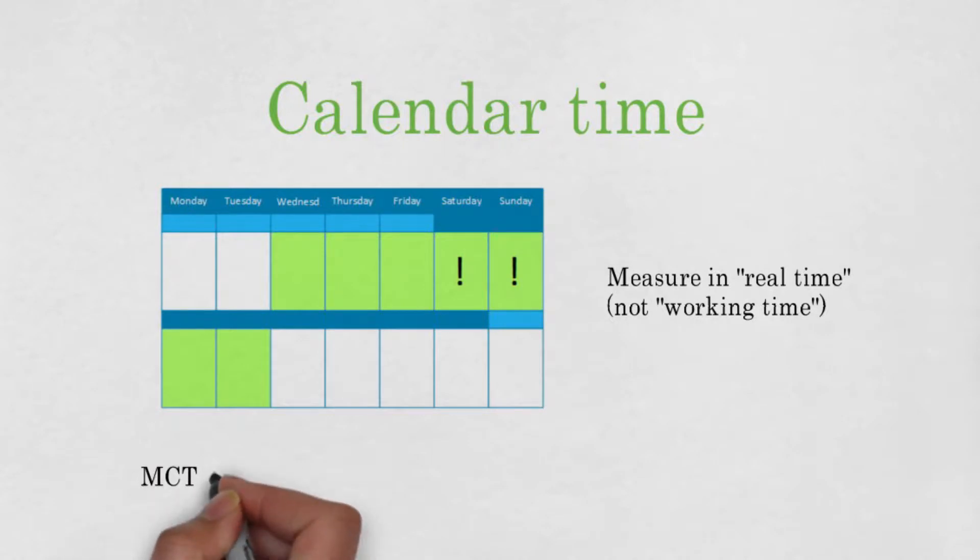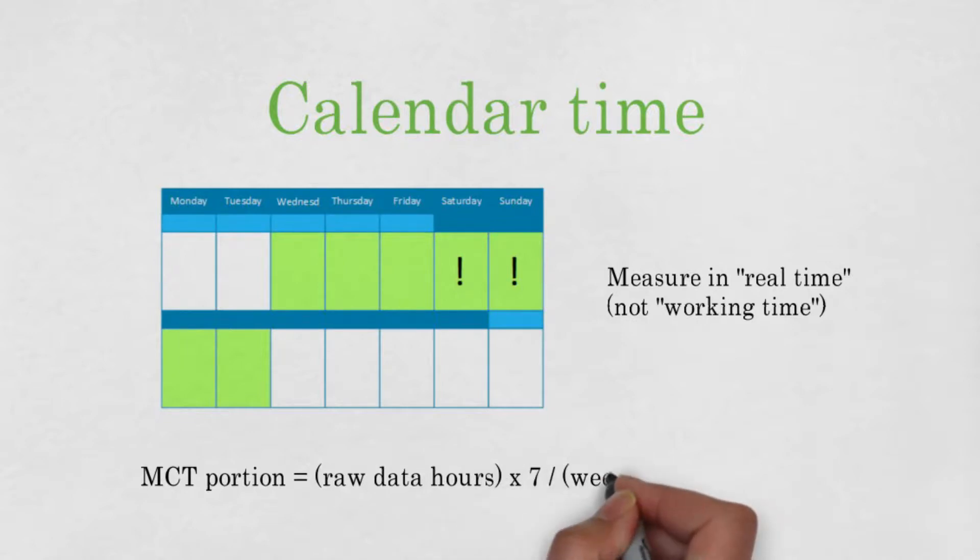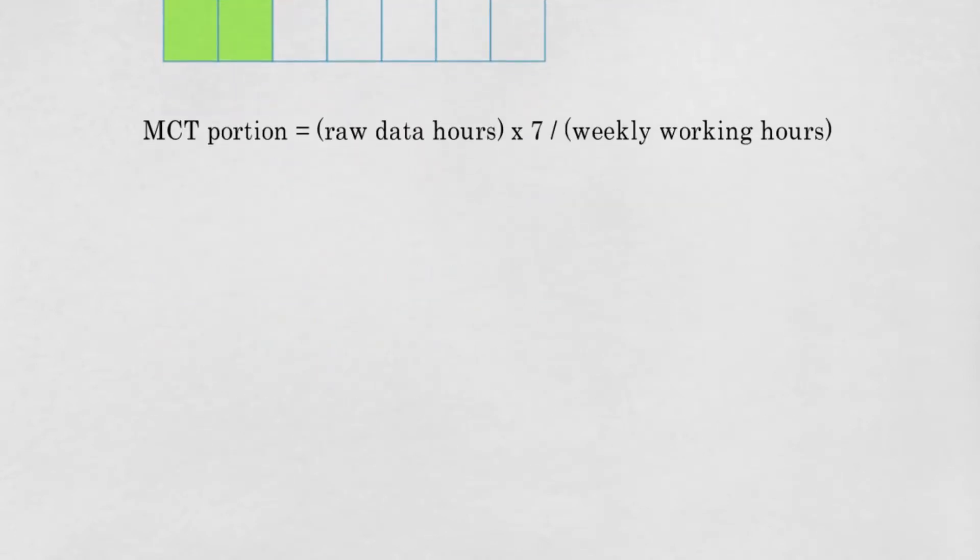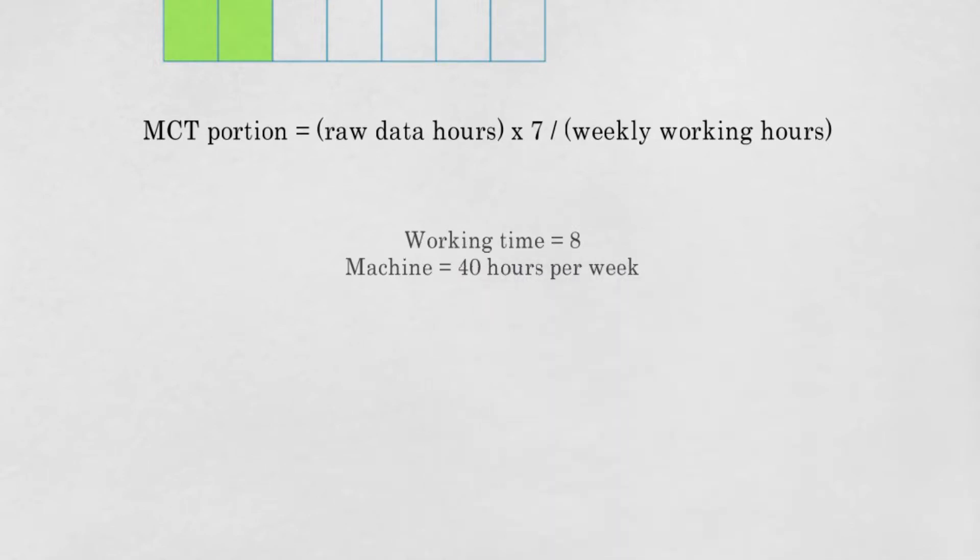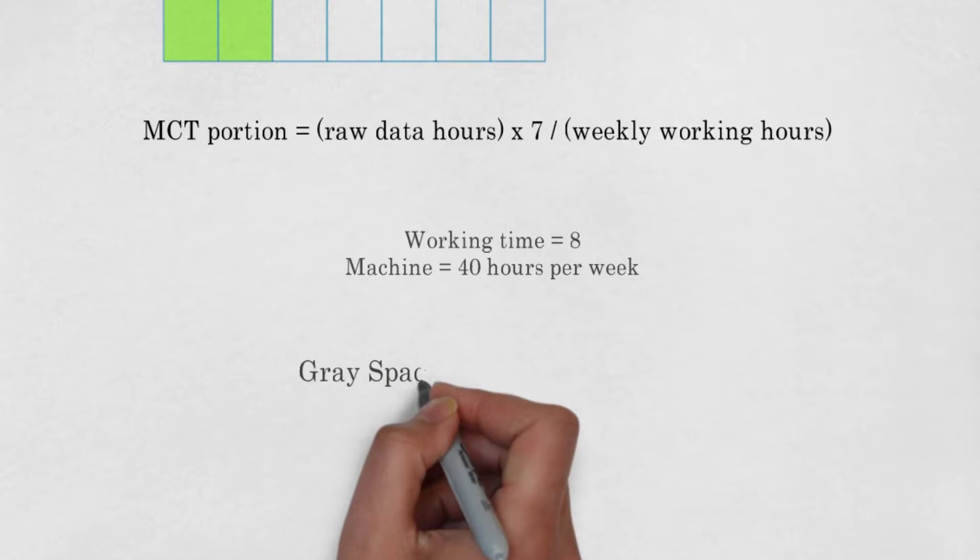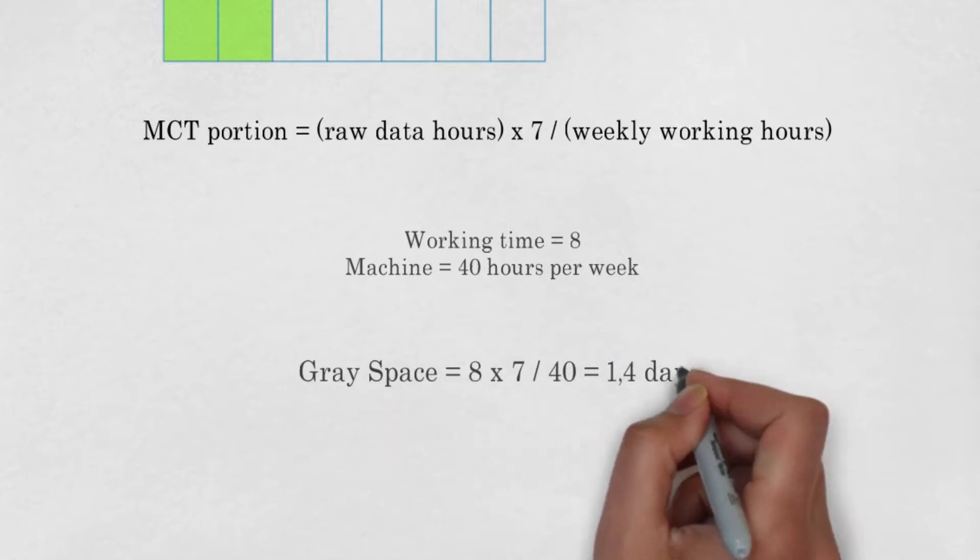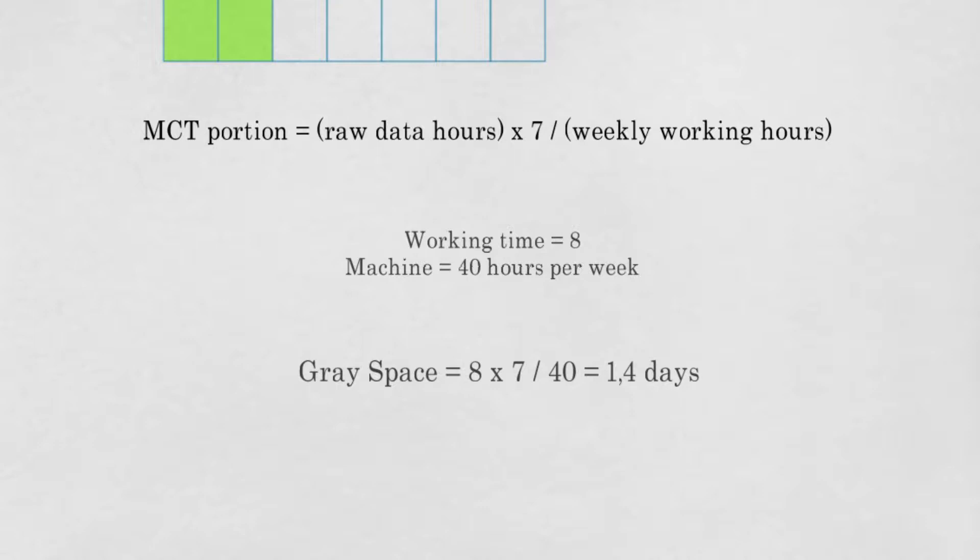Your MCT portion is the raw data hours times 7, these are the weekdays, so your real time, divided by the weekly working hours. To give an example, if data collection shows you that the working time is 8 hours and the machine works 40 hours per week, you can use these numbers to fill the formula. Then the gray space for this operation would be 8 times 7 divided by 40 is 1.4 days.